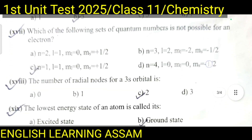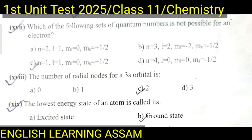Question number seventeen: Which of the following sets of quantum numbers is not possible for an electron? The correct answer is n=1, l=1, ml=0, ms=+1/2 — this is not possible because when n=1, l cannot equal 1.